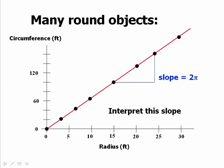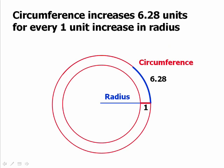What that means is that in order to go one unit to the right on the horizontal axis, I have to go 6.28 units up on the vertical axis. What that means is that if I want the radius of my circle to increase by one foot, I'm going to have to add only 6.28 feet of rope. We added 20 feet of rope, which is about three times 6.28.